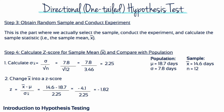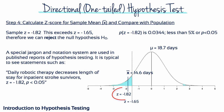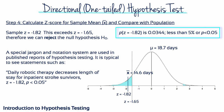Step 3 is where we do the experiment and calculate a sample mean based on our sample data. We then convert that sample mean into a z-score, which in this case is negative 1.82. Our sample z-score of negative 1.82 exceeds the critical region boundary of negative 1.65. Therefore, we can reject the null hypothesis. The probability of obtaining a z-score of negative 1.82 is 0.0344, in other words less than 5%. So we can report: daily robotic therapy decreases the length of stay for inpatient stroke survivors, z equals negative 1.82 with a p-value of less than 0.05.